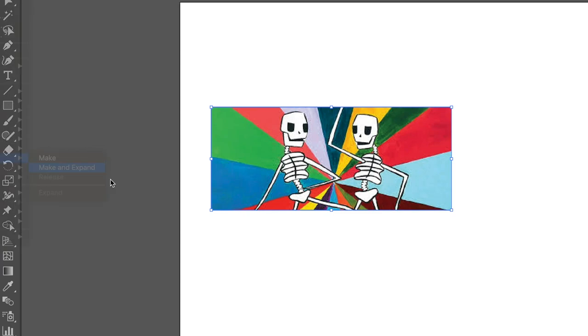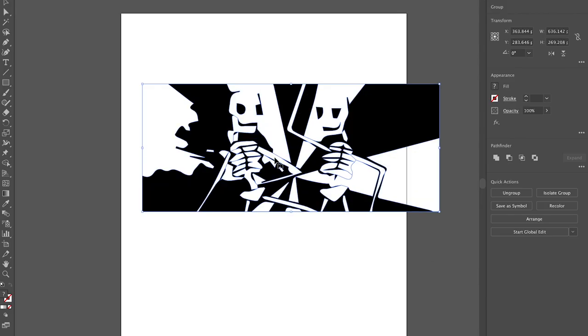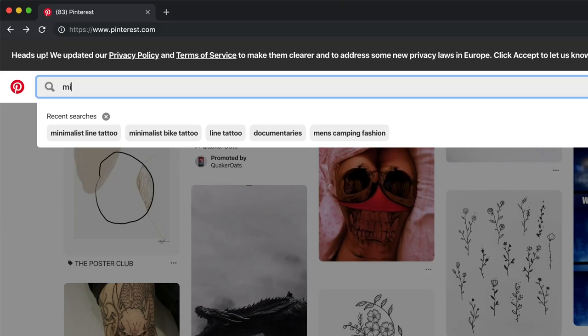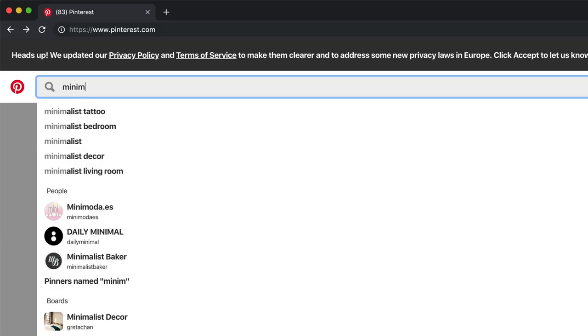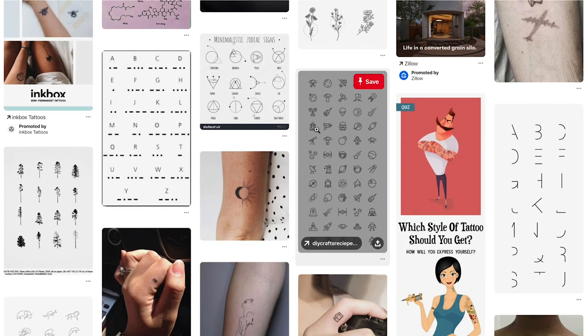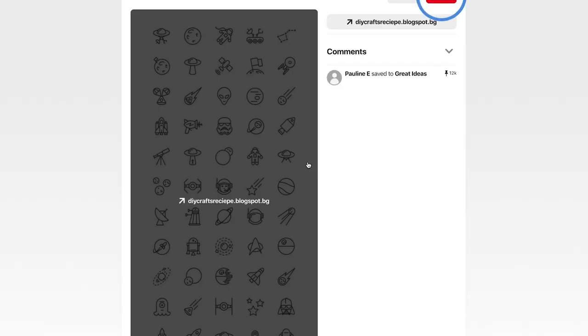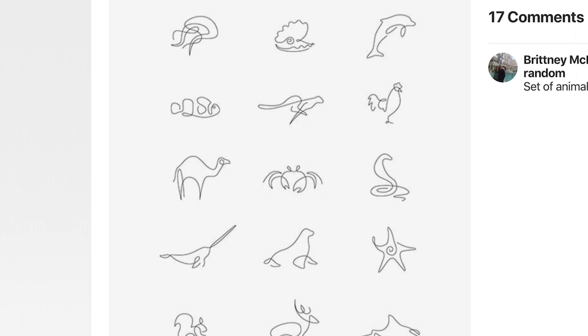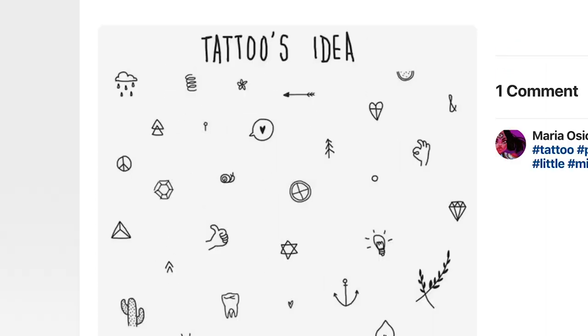If I don't have an original idea or there isn't an existing image that I want to modify, I like to go to Pinterest and get a little bit of inspiration. There's a lot of good stuff on there, a lot of good simple minimalist line work that works great for stick and poke tattoos, really simple stuff.